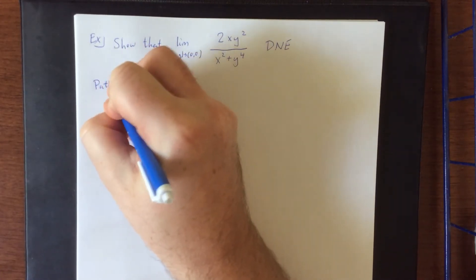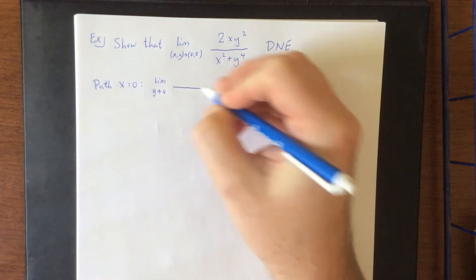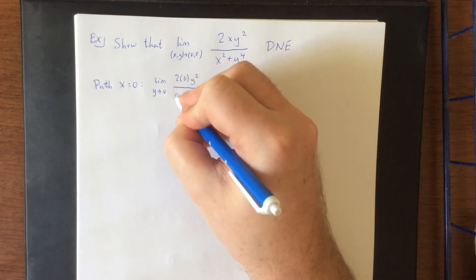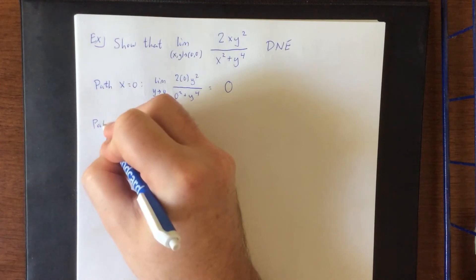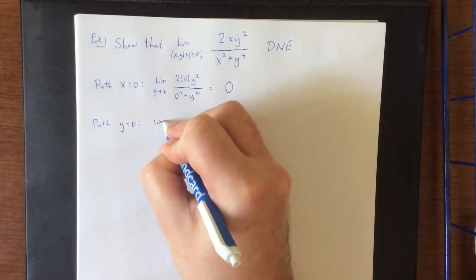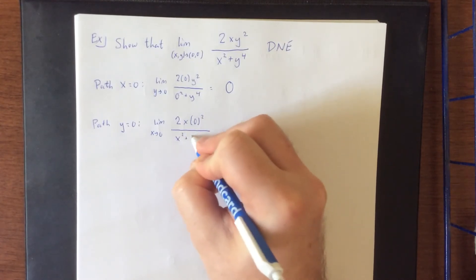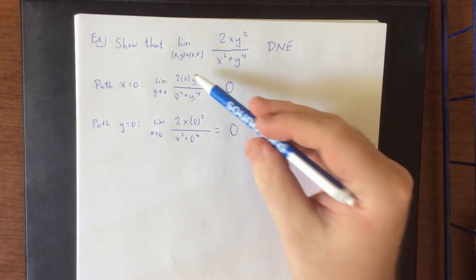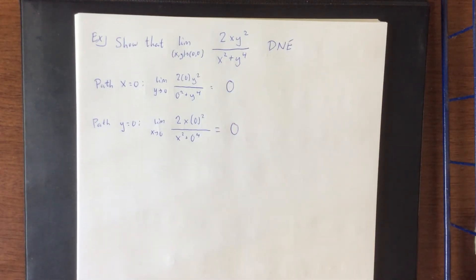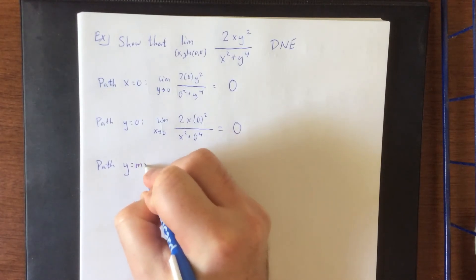Trying the path x equals 0 gives the limit as y approaches 0 of 2 times 0 times y squared over 0 squared plus y to the fourth, which equals 0. Trying the path y equals 0 gives the limit as x approaches 0 of 2 times x times 0 squared over x squared plus 0 to the fourth, which also equals 0. In both cases the numerator was identically 0 and the denominator was approaching 0, giving 0.